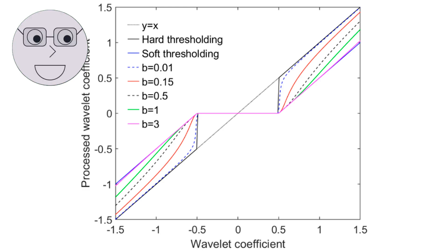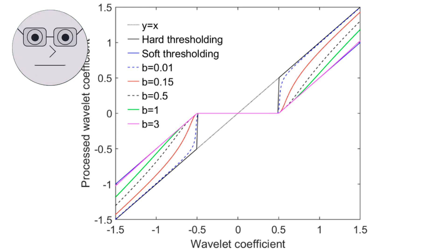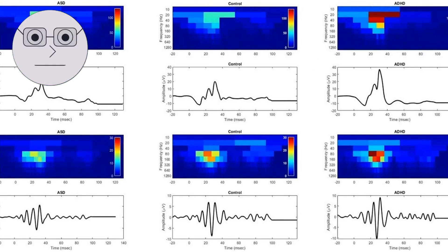Wavelets can be designed to be smooth, which means that they can capture the overall trend of a signal. This property is useful in applications such as denoising, where we want to remove noise from a signal while preserving its overall trend. In the next segment, we will explore some of the applications of wavelets in more detail.